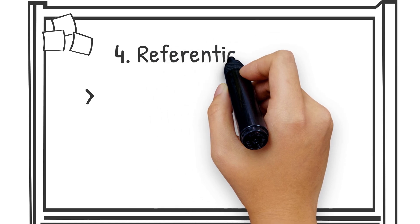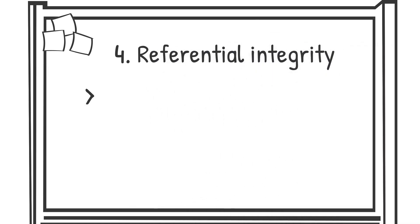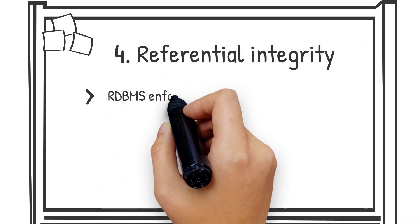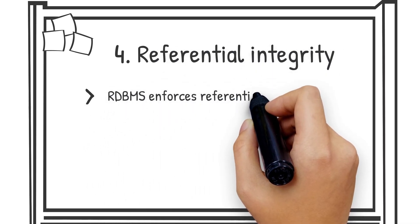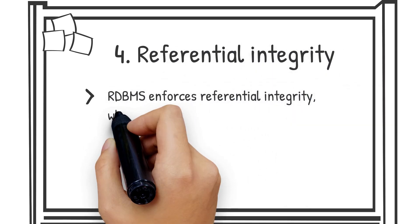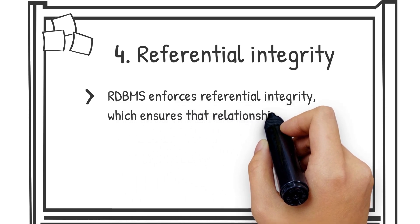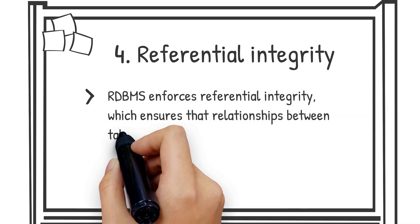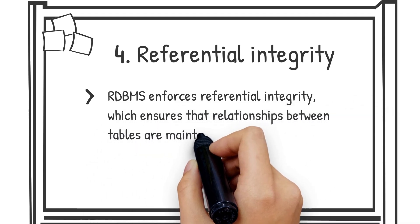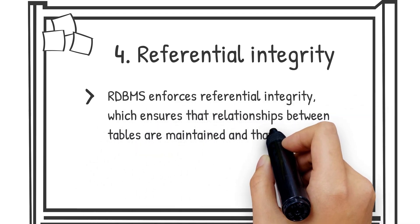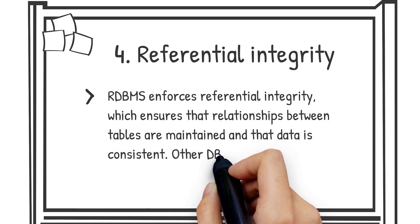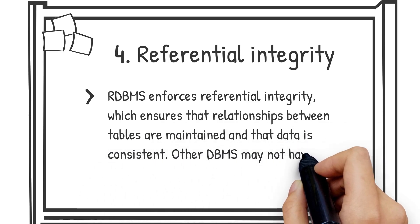Number four, referential integrity. RDBMS enforces referential integrity, which ensures that relationships between tables are maintained and that data is consistent. Other DBMS may not have this feature.